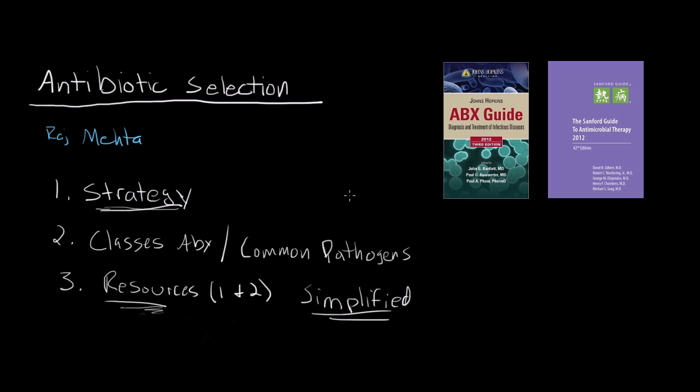Antibiotic selection can be a very challenging topic because there is such a large, overwhelming volume of knowledge to master. The point of this guide is that if you have a systematic approach toward antibiotic selection, you can make use of evidence-based resources like the Johns Hopkins Antibiotic Guide or the Stanford Guide. If you don't have either one of these, I would recommend you get it, whether in book form or as an app — most educational institutions should be able to subscribe to them for relatively low cost or for free.